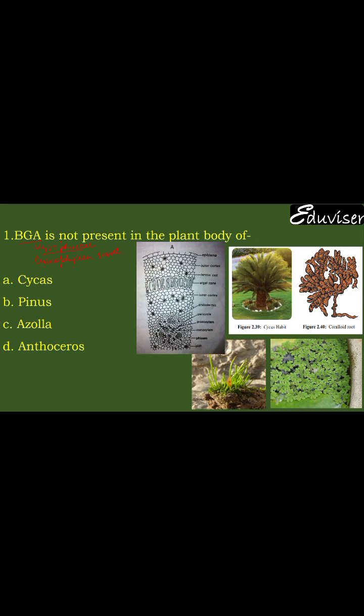Questions come from all these topics. Now the question asks: BGA is not present in the plant body of which organism? BGA has a special characteristic — it can do nitrogen fixation. So wherever BGA is present in a plant body, it means that plant is fixing nitrogen from the atmosphere. This is a symbiotic association — mutualism — both benefit each other.